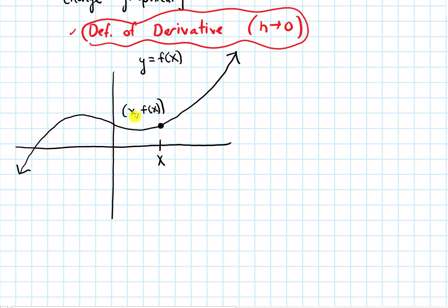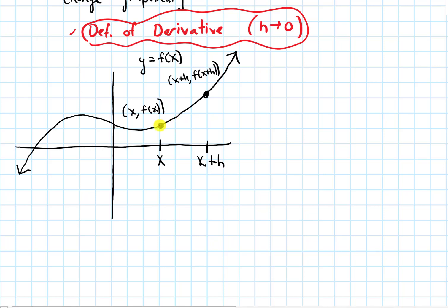Using our idea from previous sections, we can find a nearby point. I'm going to call this nearby point x plus h — so x plus a small amount. The coordinates of this point are going to be x plus h for the x coordinate and f of x plus h for the y coordinate. Now I'm going to connect them with a secant line — a straight line connecting two points on a graph.